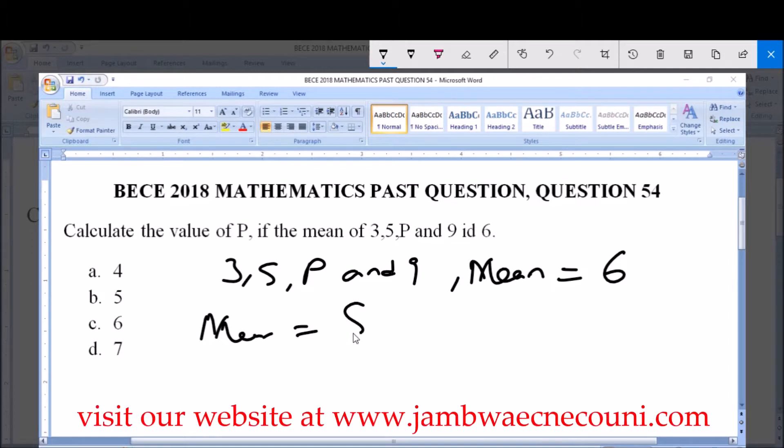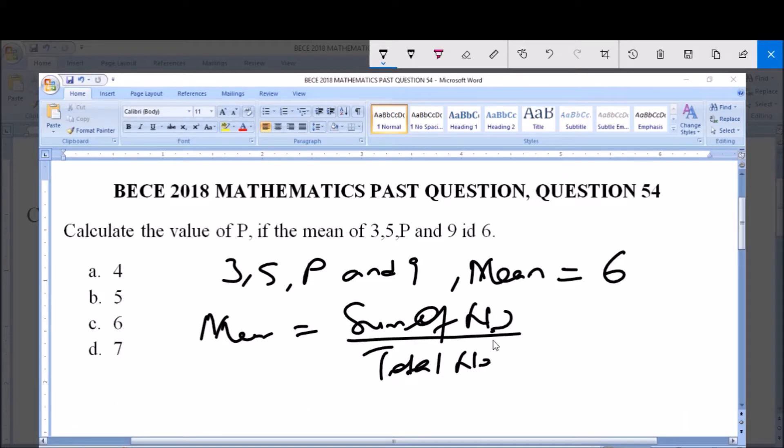The sum of numbers all over the total number of numbers, and the total number of numbers n is equal to 4. If you count the numbers: 3 is 1, 5 is 2, P is 3, and 9 is 4. Now we are asked to find P which is an unknown.